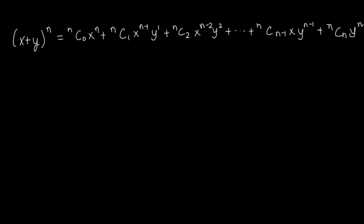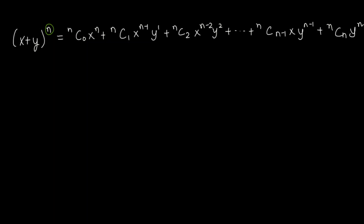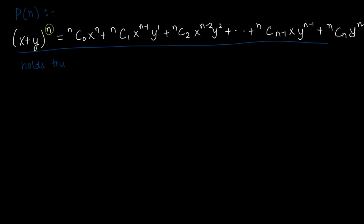We know how to get to the binomial theorem through intuition. Let's try to prove it using mathematical induction. This is the generalized form of the binomial theorem, where n is any natural number. When we raise (x + y) to the power n, we get an expression where the c's are the combinations. To prove this using mathematical induction, we define a statement P(n): that this expansion holds true for some natural number n.